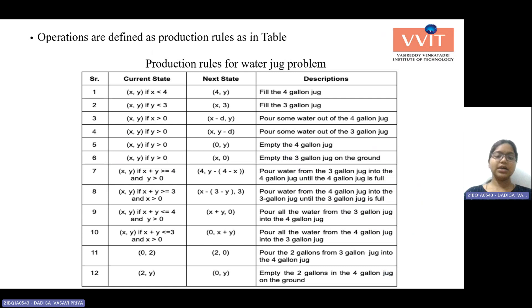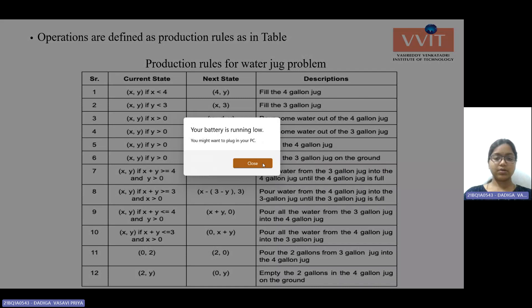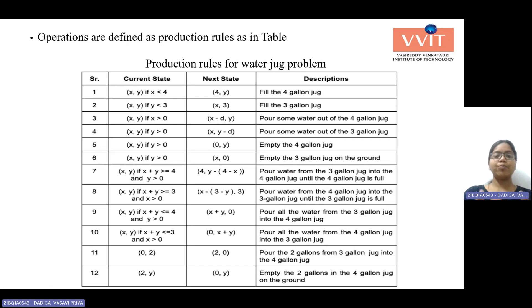Regarding this table, we are going to use production rules to solve this water jug problem. Let us see each of the rules one by one. Here, the current state is described and then the next state we need to move to is shown above the description.